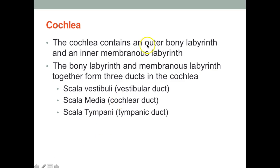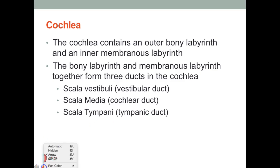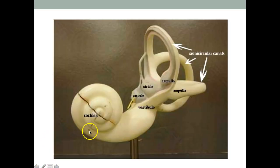The cochlea contains an outer bony labyrinth and an inner membranous labyrinth. Together they form three ducts in the cochlea: the scala vestibuli, scala media, and scala tympani — also called vestibular duct, cochlear duct, and tympanic duct. The terms I typically use in lab are: scala vestibuli, cochlear duct, and scala tympani. It's important to remember these three ducts formed in the cochlea.